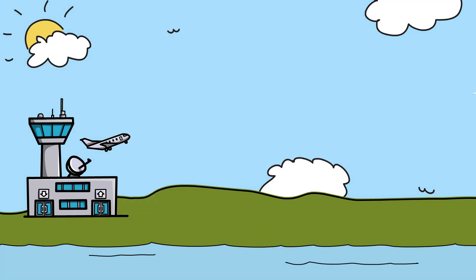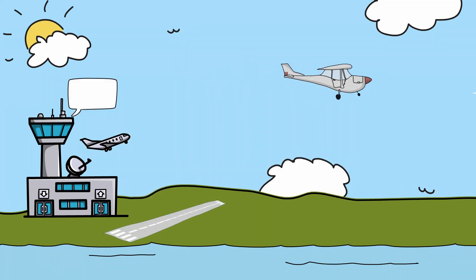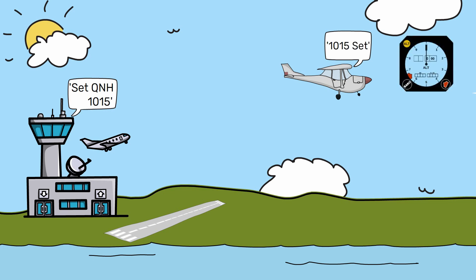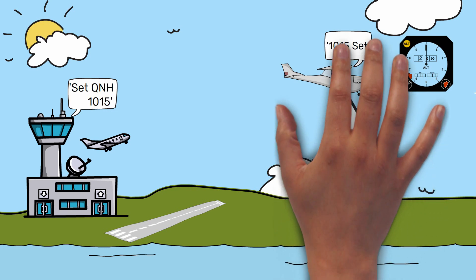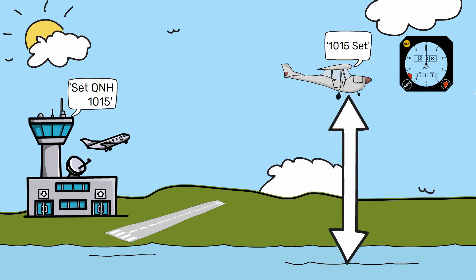Let's say that air traffic control has instructed you to set QNH 1015. As you do, your altimeter reads 2000 feet — 2000 feet being your altitude from you to mean sea level.